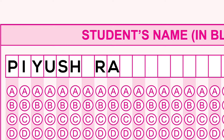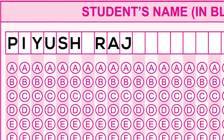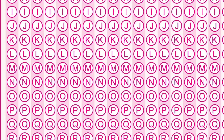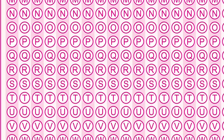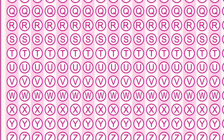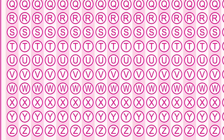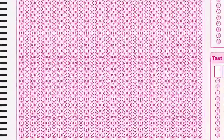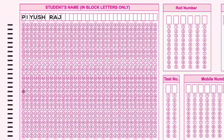We have to fill in each letter into the text boxes. If you have a letter, you need to fill each letter one by one. When you start with 'P', you should confirm that letter. Remember, if we have a letter, we fill in the first letter, then continue with each subsequent letter.